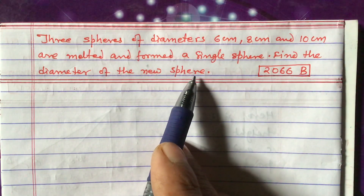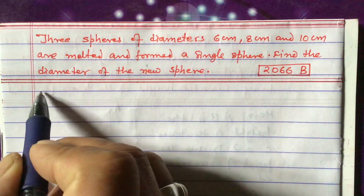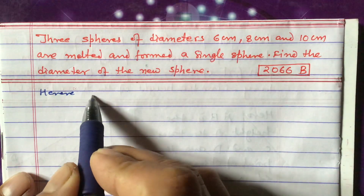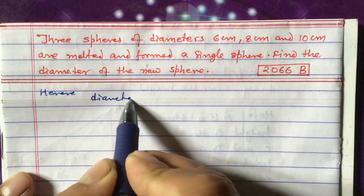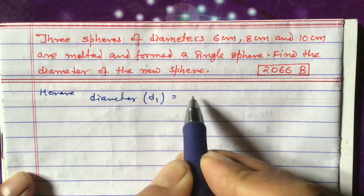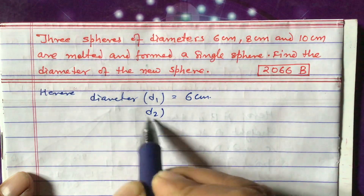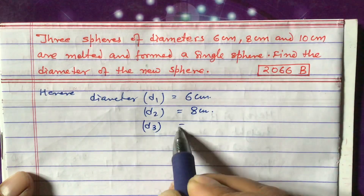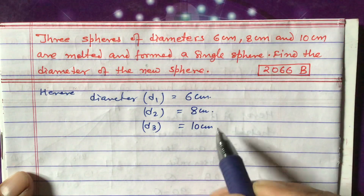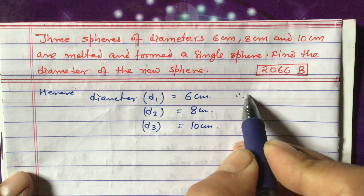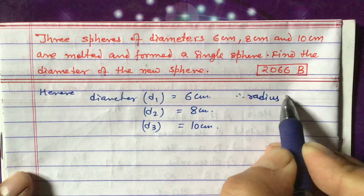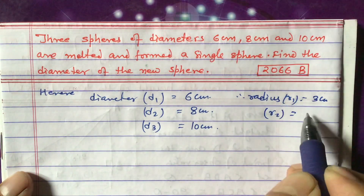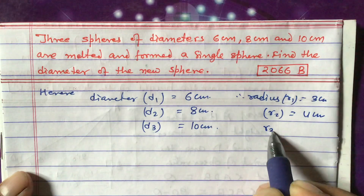Here the diameters of three spheres are given: diameter d1 equals 6 centimeter, d2 equals 8 centimeter, and d3 equals 10 centimeter. Therefore we can find the radii also: r1 equals 3 centimeter, r2 equals 4 centimeter, and r3 equals 5 centimeter.